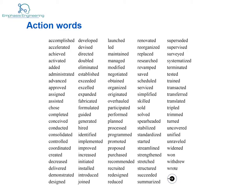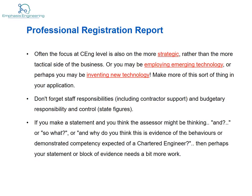We have some examples of action words here — feel free to use them and explore other action words that could be relevant. For the CEng route, the keyword is 'strategy' — looking at the strategic rather than the tactical side. You may be employing emerging technology or perhaps inventing new technology. If you have people working for you, it's important that you mention that.